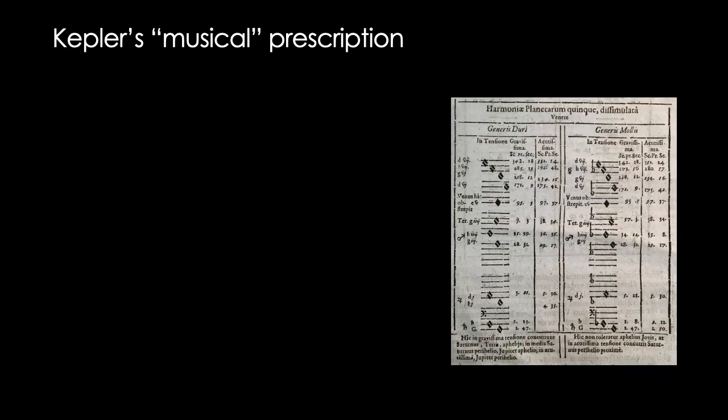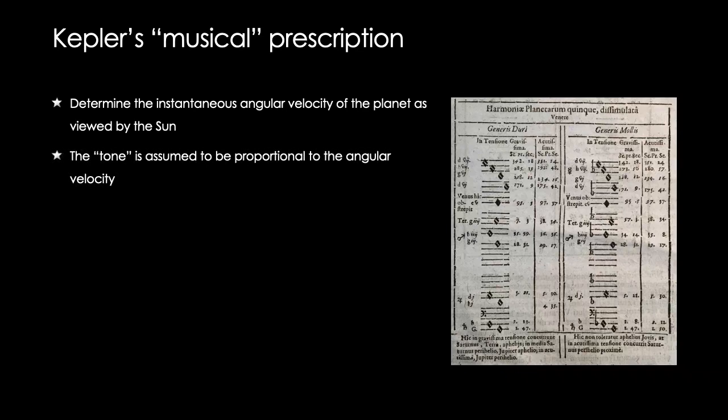The actual prescription that he used, the algorithm he used, is very simple. You take the instantaneous angular velocities of the planets, again as viewed from the center. You assume that the tone, the frequency, is proportional to that angular velocity.